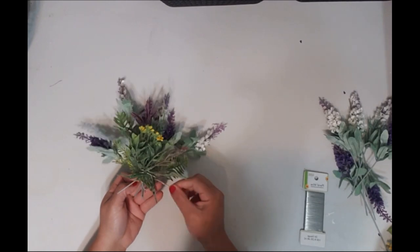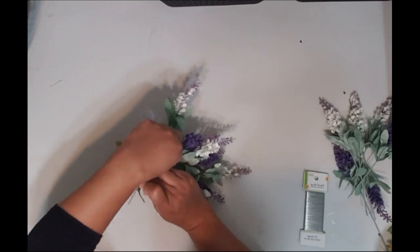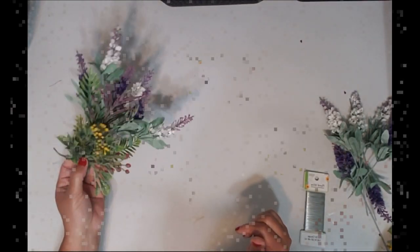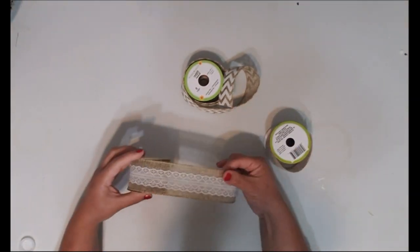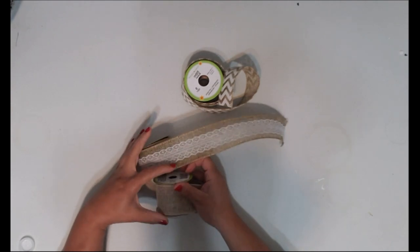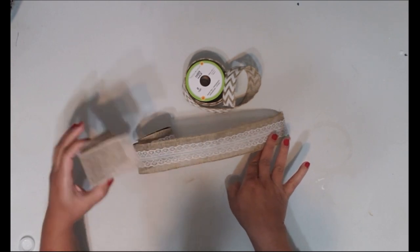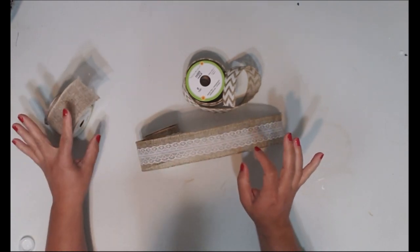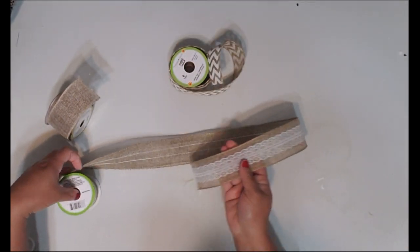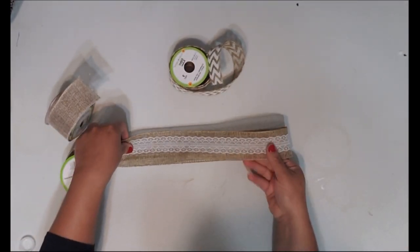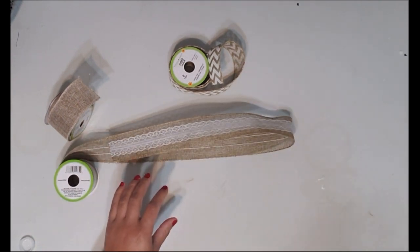Alright guys, so we're going to do the bow. I am going to start off with, because the burlap and lace burlap are the same width, I'm going to start off with the lace burlap on the bottom and then do the regular burlap on top, and then the chevron because it's thinner on top. I'm going to make the bottom bow a lot bigger than actuality.